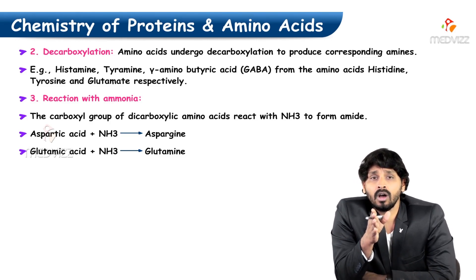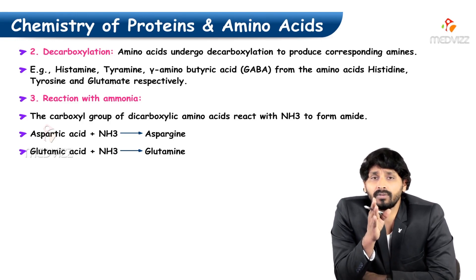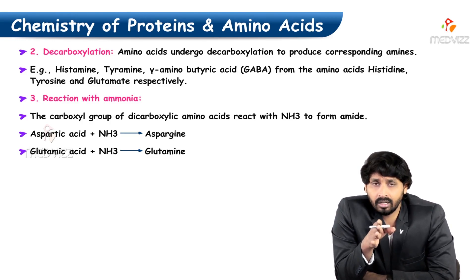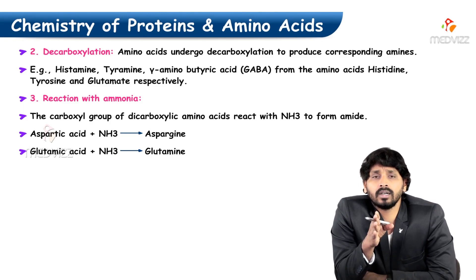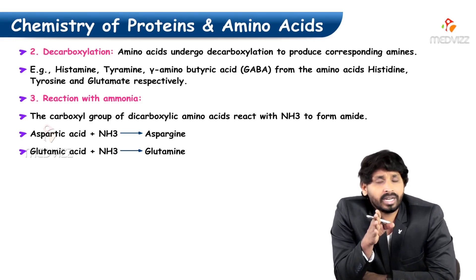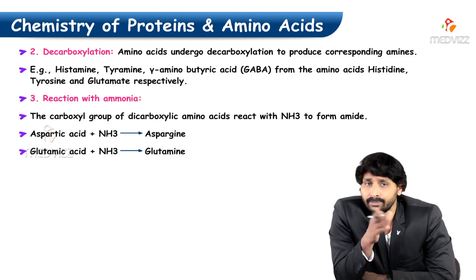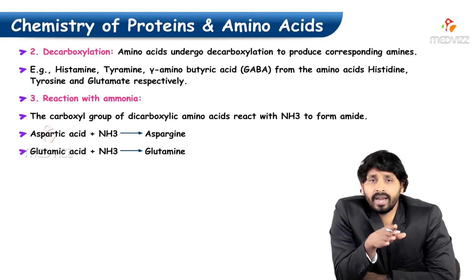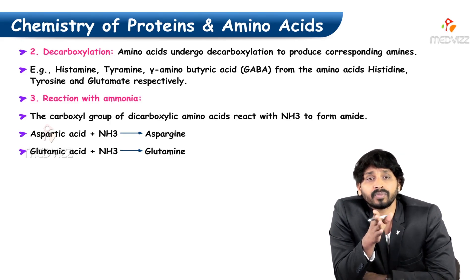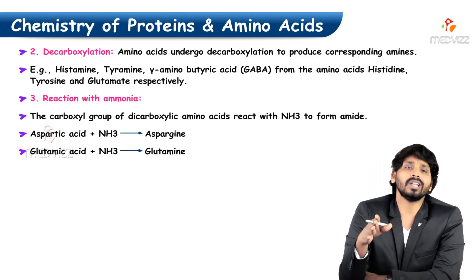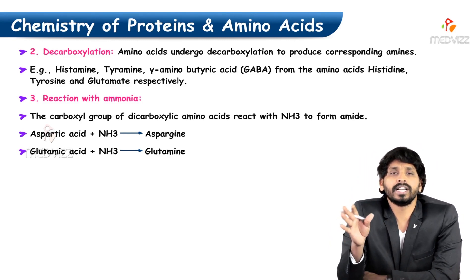Glutamine is involved in the detoxification of ammonia. Since ammonia is toxic, it must be transported in a non-toxic form and cannot be freely transported in circulation. Ammonia is accepted by glutamic acid in the brain or other parts of the body, converted to glutamine, and easily transported in the circulation to the liver where it will be detoxified.